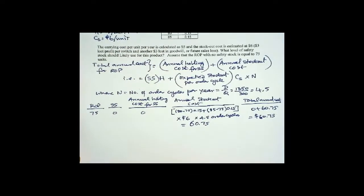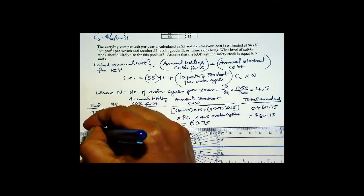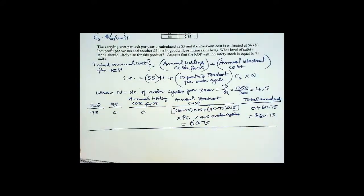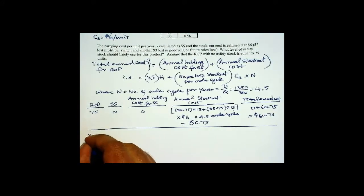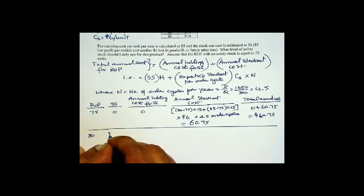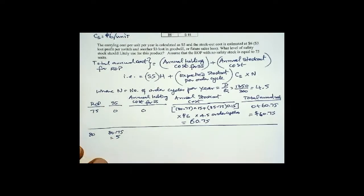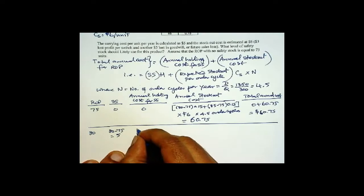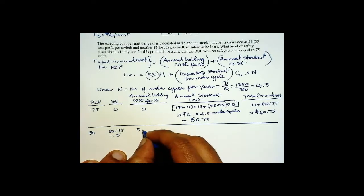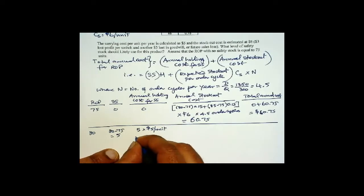Now for the second case, we set ROP to 80. Then safety stock equals 80 minus 75, which is 5. We have added 5 units as safety stock. The annual holding cost for safety stock is 5 times $5 per unit, giving us $25.